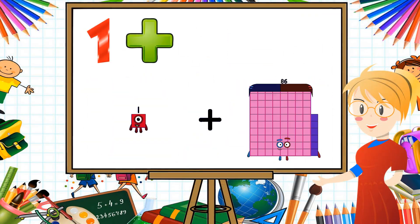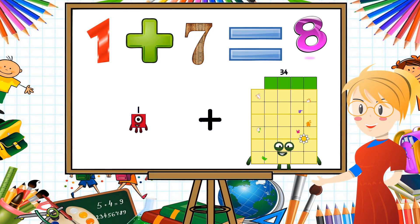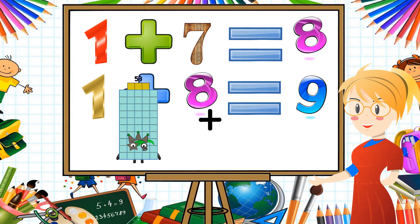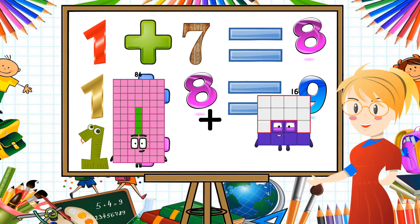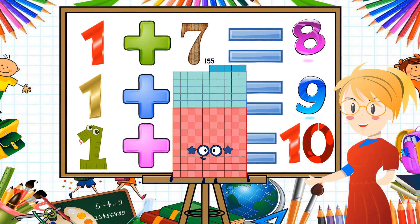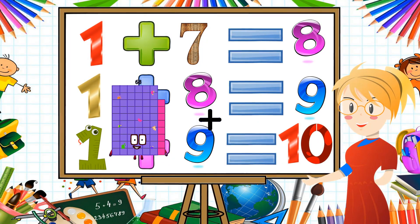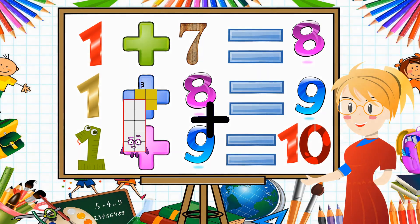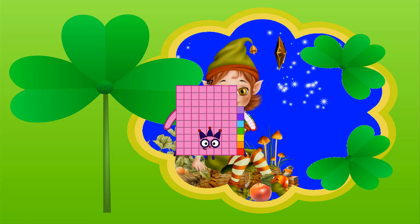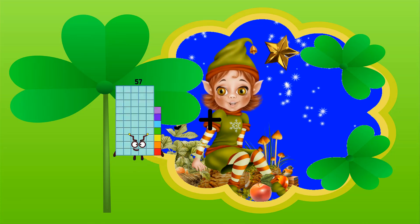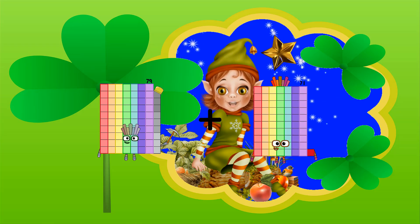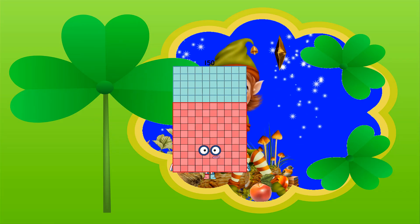1 plus 34 equals 35. 84 plus 71 equals 155. 13 plus 74 equals 87. 79 plus 71 equals 150.